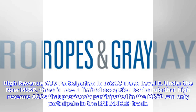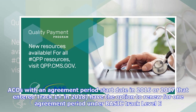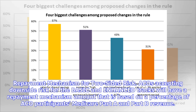High revenue ACO participation in Basic Track Level E: under the new MSSP, there is now a limited exception to the rule that high revenue ACOs that previously participated in the MSSP can only participate in the Enhanced Track. High revenue ACOs that transitioned to Track 1 within their current agreement period — specifically ACOs with an agreement period start date in 2016 or 2017 that entered Track 1 in 2018 — have the option to renew for one agreement period under Basic Track Level E.